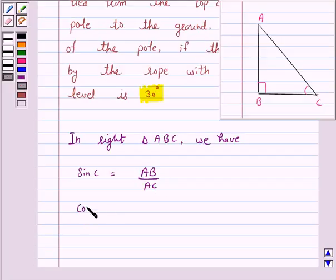Cos C is equal to the side adjacent to angle C upon hypotenuse, that is BC upon AC. And tan C is equal to the side opposite to angle C upon the side adjacent to angle C, that is AB upon BC.